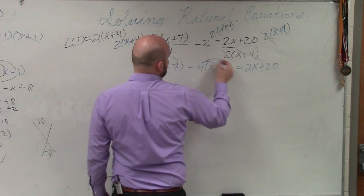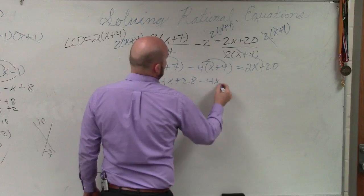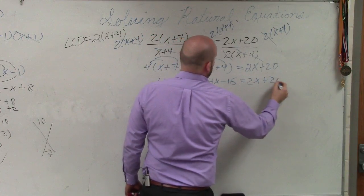Apply the distributive property. So therefore, I get 4x+28 minus 4x-16 equals 2x+20.